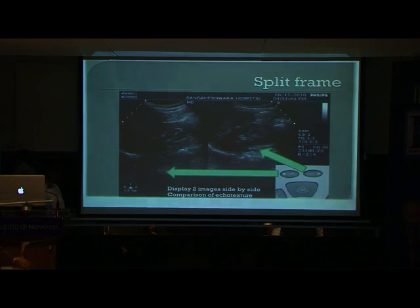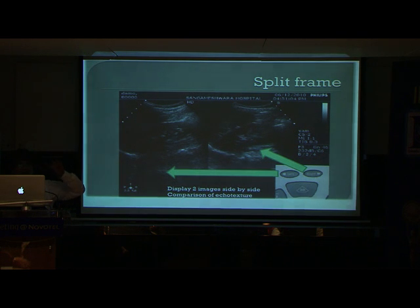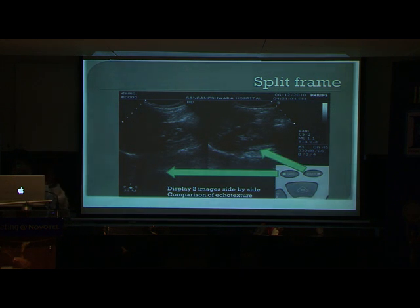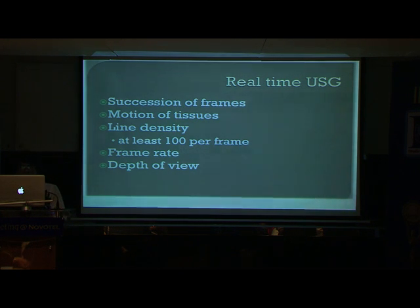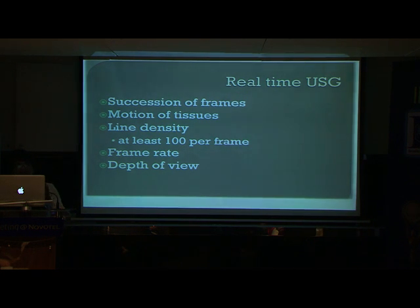Split-frame imaging: you keep the reference frame on the left-hand side and the live frame on the right-hand side. This way, you always know where you are going and where the target is for needle placement — for example during a kidney biopsy. You match the live image with the intended target on the reference frame. Real-time imaging: we see an image at 15 to 30 frames per second, giving live imaging. All these are technical parameters to learn when you buy a machine and begin practice.